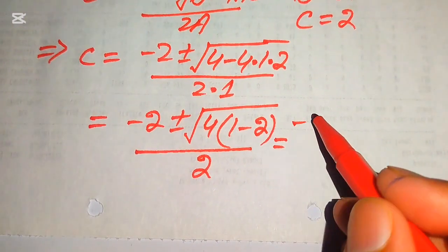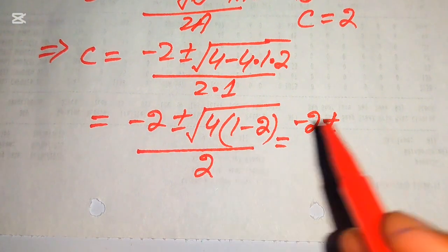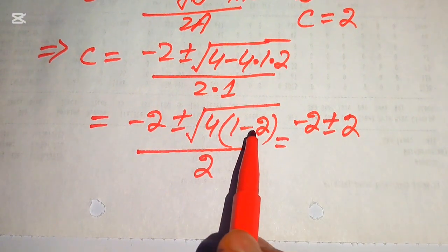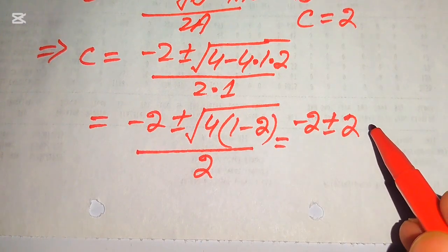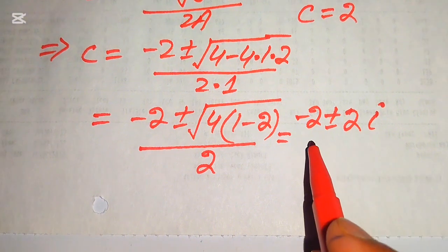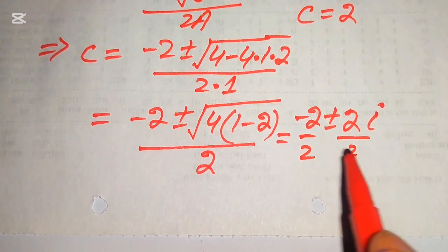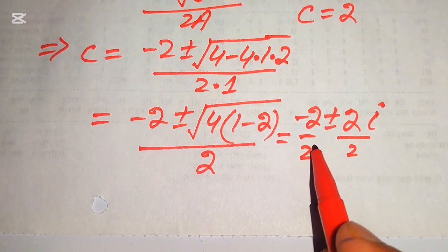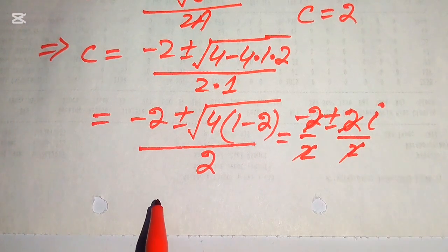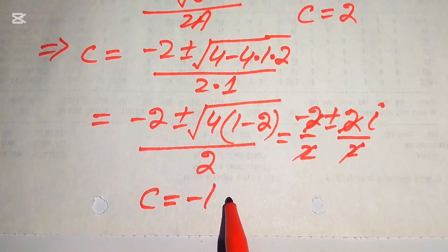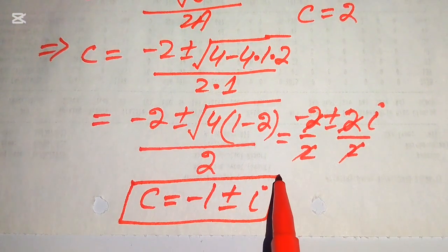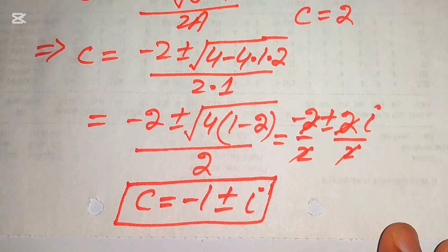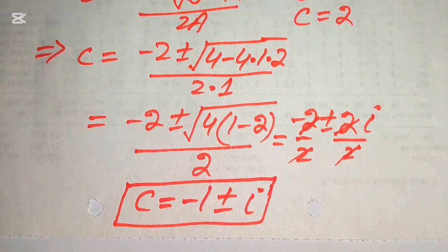We have (-2 ± √(-1)·2) / 2. Since the square root of -1 equals i, after breaking the fraction and cancellation, we get c = -1 ± i. These are the other two complex roots of the given equation. So we have all four complex roots of the given equation, and this is the final answer. Thank you so much for watching this video — please subscribe to my channel for more exciting videos.